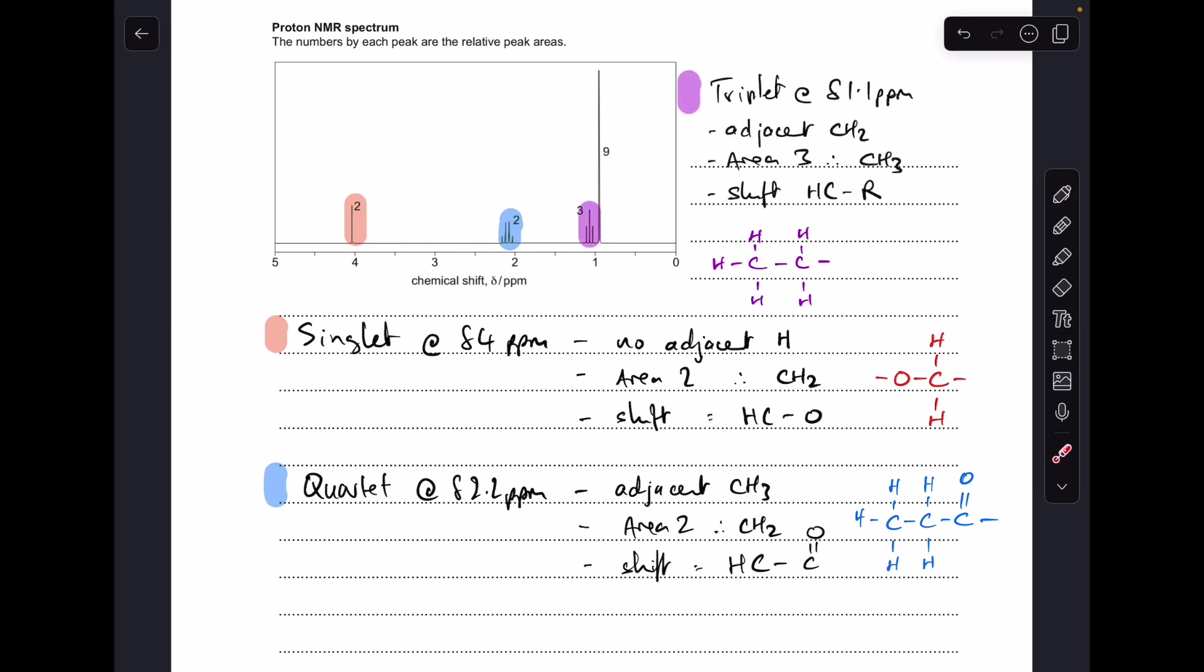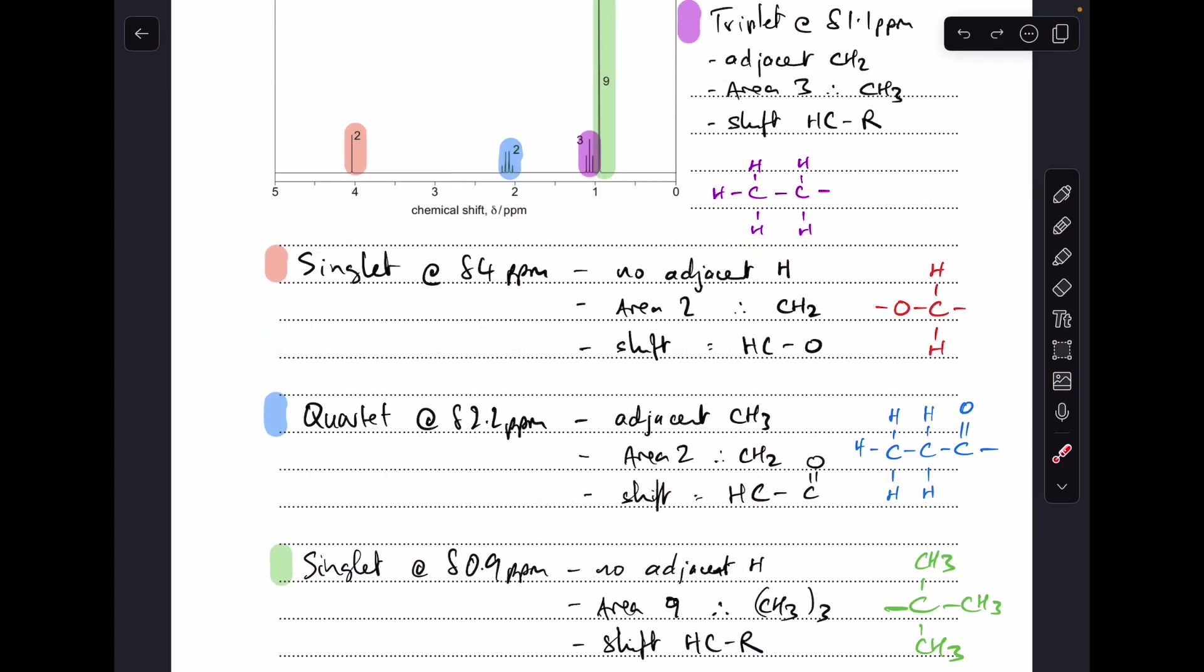Moving on to the triplet at δ 1.1 ppm. Triplet means there's an adjacent CH2. Area 3 means CH3 causing the signal. Shift is H-C-R. We've actually already identified this signal—it's these protons here that I've drawn up in blue, but I've just drawn that part again in purple.